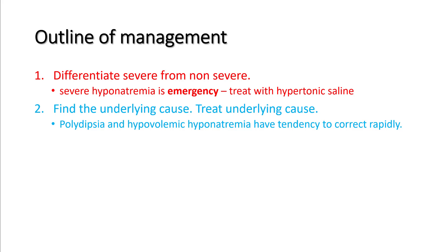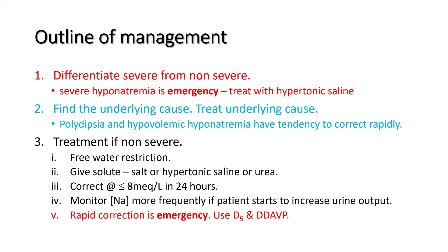Understand that patients with polydipsia and hypovolemic hyponatremia have a tendency to correct rapidly. If hyponatremia is non-severe, use free water restriction. If this doesn't work, you can give solute in the form of salt or hypertonic saline. Your correction rate must be less than 8 mEq per liter in 24 hours. Monitor sodium every four hours, and more frequently if the patient starts to increase their urine output. Rapid correction is an emergency — make sure you understand the role of DDAVP and D5 in these patients.